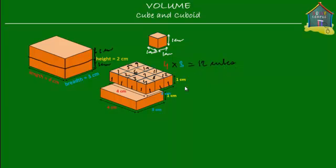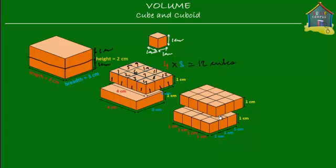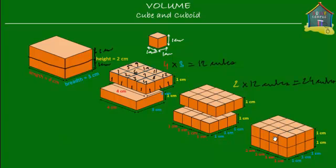So if there are 12 cubes in one layer, how many cubes will there be in both layers combined? Since there are two layers, there will be 2 times 12 cubes. So in all, there will be 24 cubes. This cuboid is made of 24 centimeter cubes. So its volume is equal to 24 centimeter cubed, or 24 cubic centimeters. Now let's see one more time how we got the volume of this cuboid as 24 centimeter cubed.